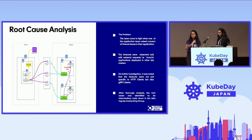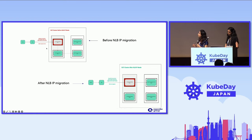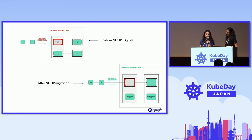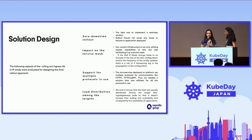Due to this abrupt termination of worker nodes, the clients were facing timeout issues, delayed server responses, and various keep-alive failures from the client side. So before NLB IP migration, there was an abrupt termination of worker nodes and a loss of client connections. After NLB IP migration mode, there was a graceful connection between the NLB and the Istio ingress gateway pod, and there were no lost requests. Handing over to Shreya for discussing the solution design and how we rolled out the solution.